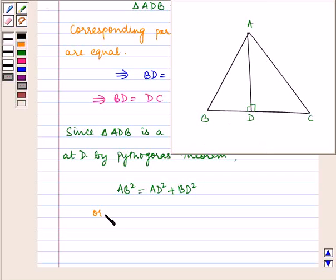Or, AB square is equal to AD square plus half BC the whole square by equation 1.